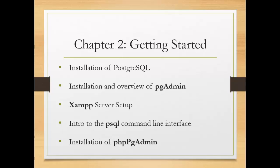In chapter two we'll install Postgres on a Windows machine. We'll have an overview of the PG Admin tool that comes with Postgres. We'll set up an XAMPP server so that we can later build a PHP application using Postgres. We'll talk about PSQL and basic command line interfaces and commands, and we'll also install PHP PG Admin, which is a database table management tool.